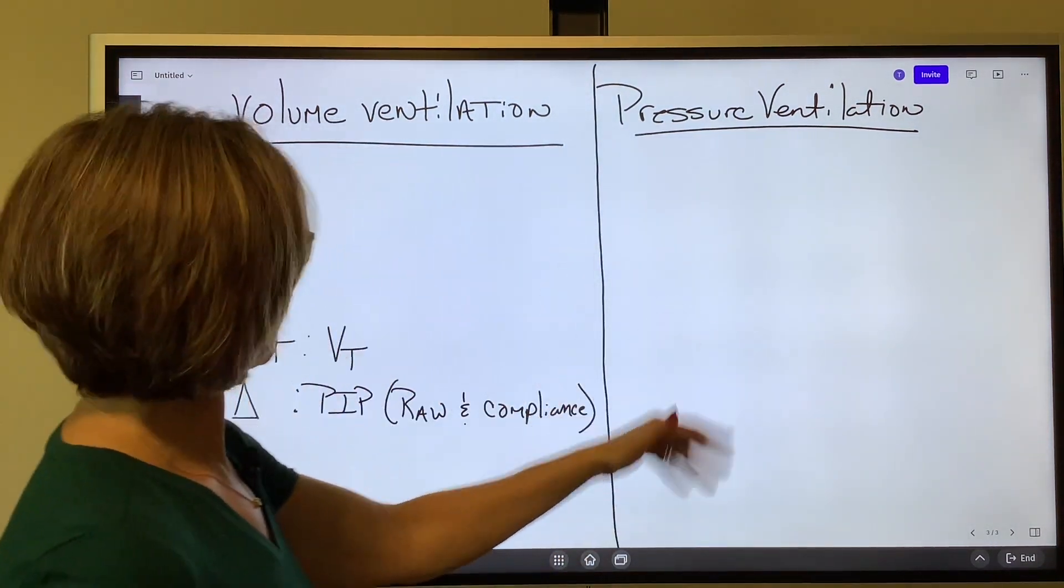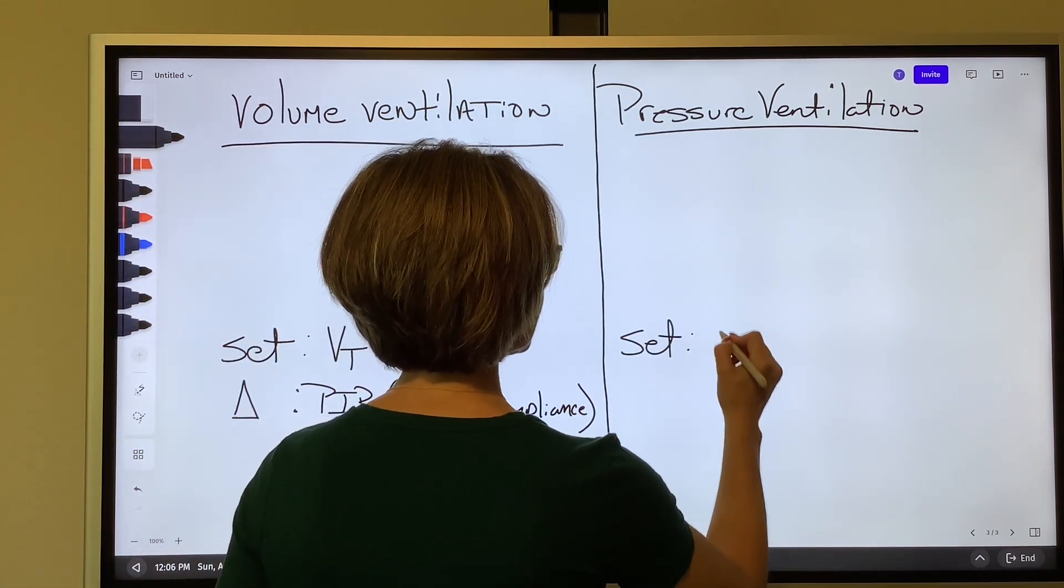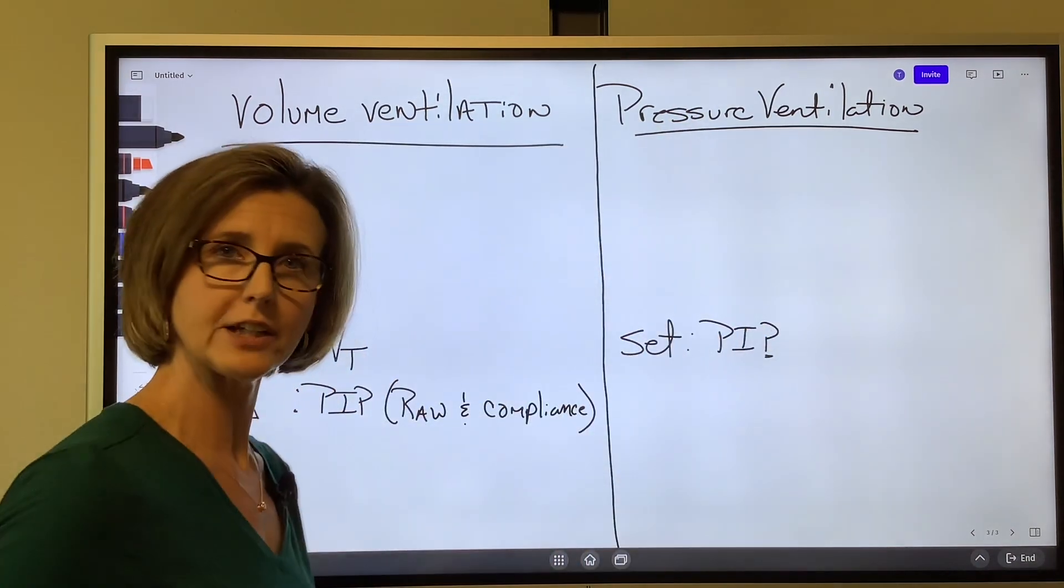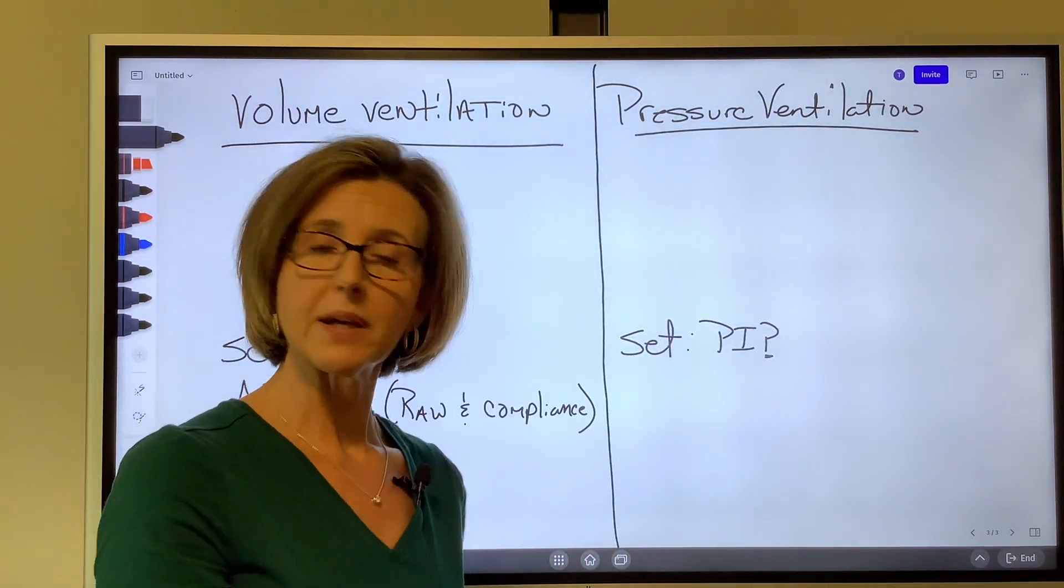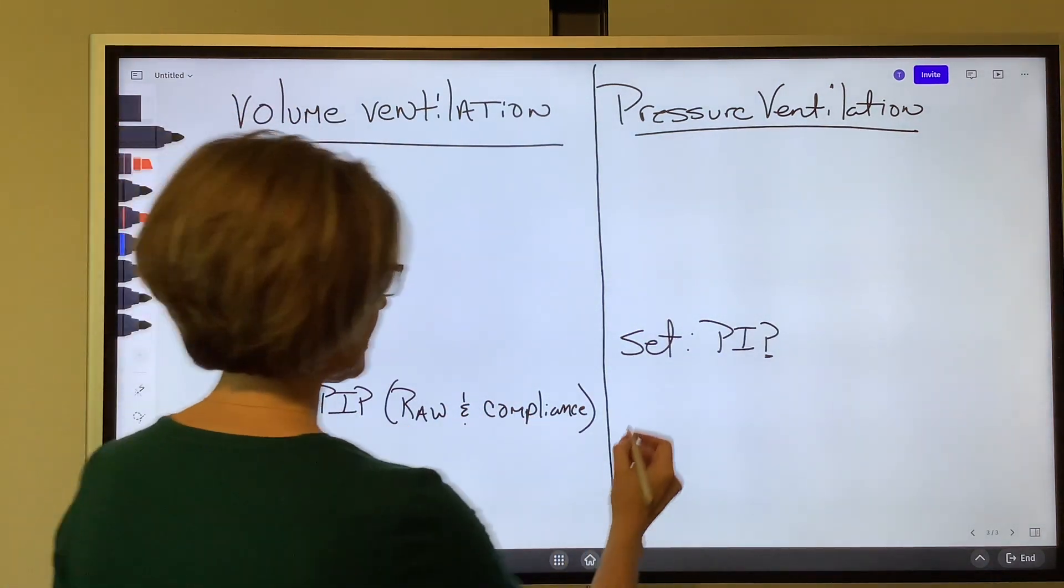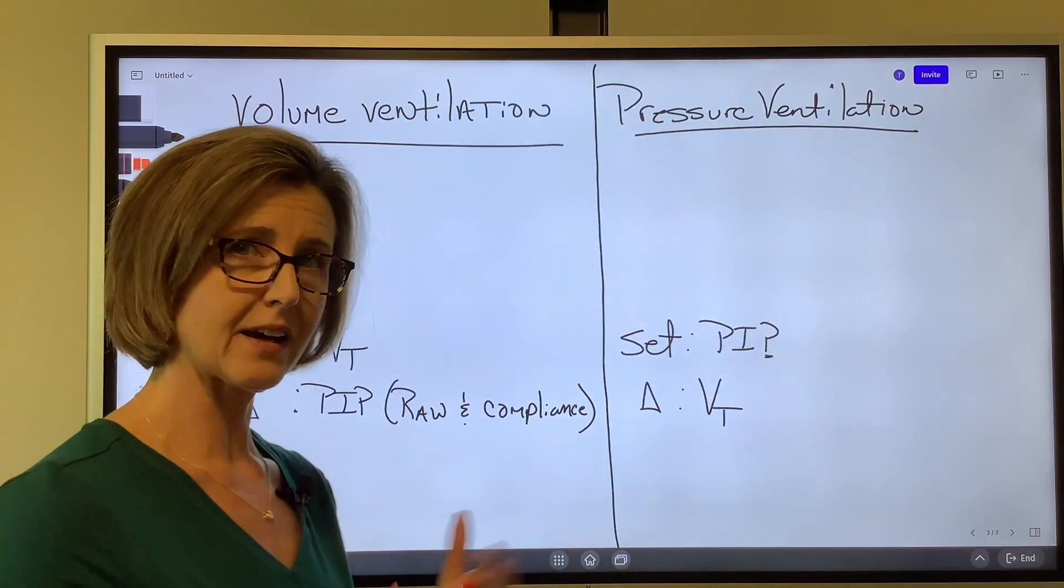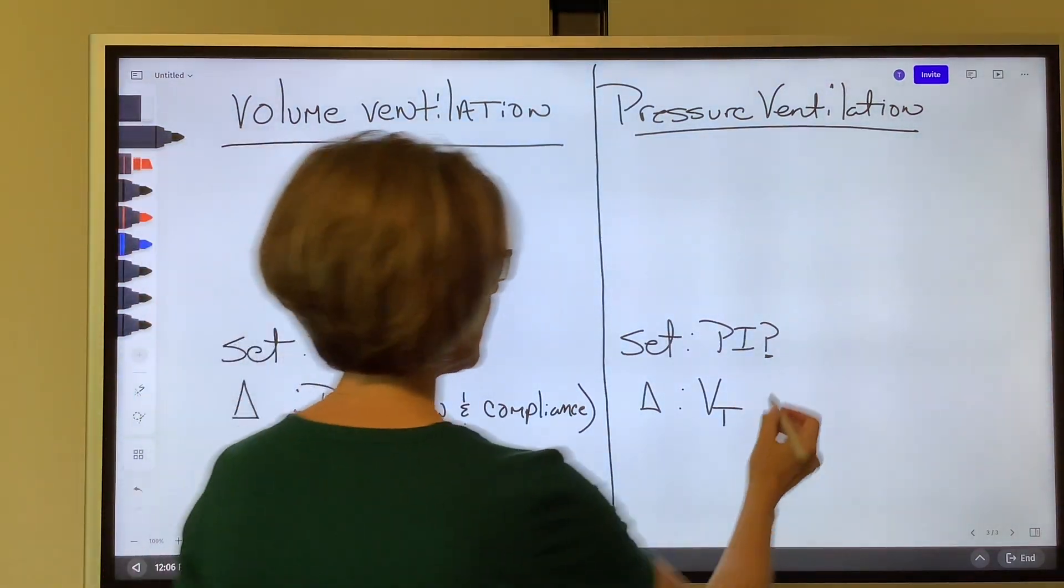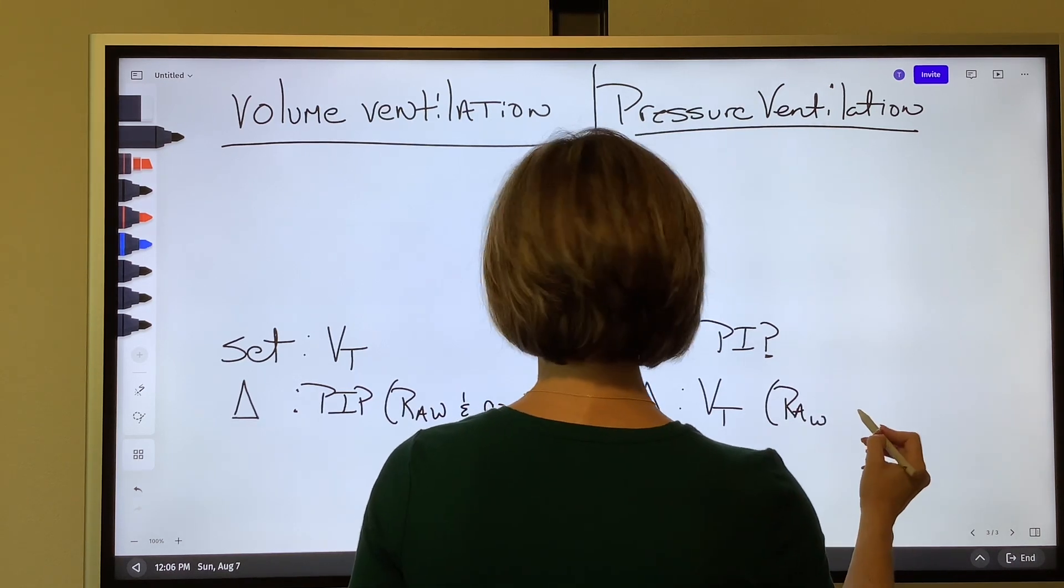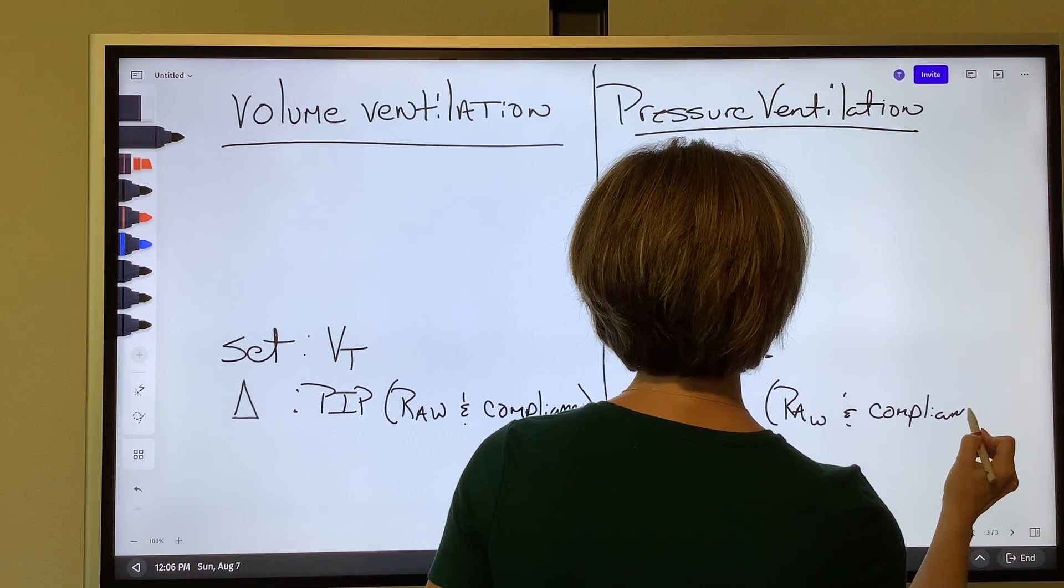In contrast, we as therapists, we set the peak inspiratory pressure because it's pressure ventilation. We set the PIP. The PIP will not change. But what will change will be the tidal volume. Okay, that tidal volume will fluctuate because of airway resistance changes and lung compliance or alveolar compliance changes.